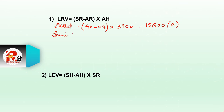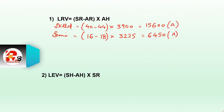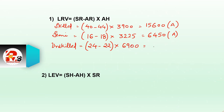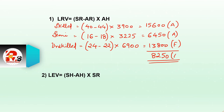Then semi-skilled: standard rate 16 minus actual rate 18, multiplied by actual hours 325. Answer = 6,450 adverse. Then unskilled: standard rate 24 minus actual rate 22, multiplied by actual hours 6900. Answer = 13,800 favorable. Total labor rate variance = 8,250 adverse, because two were adverse and one was favorable.